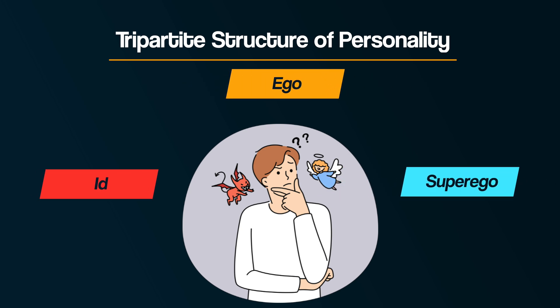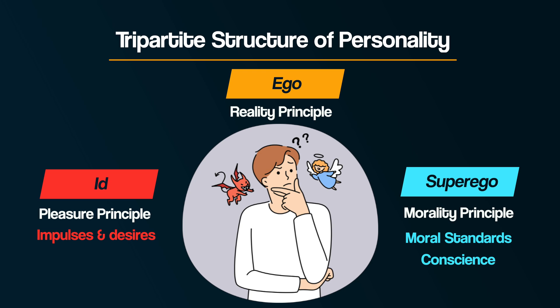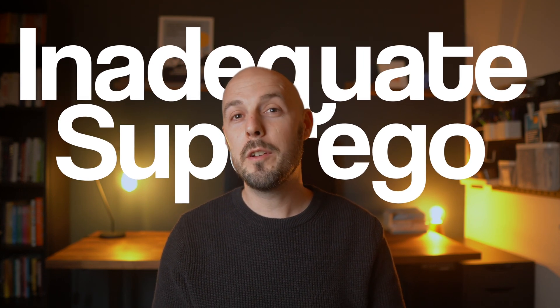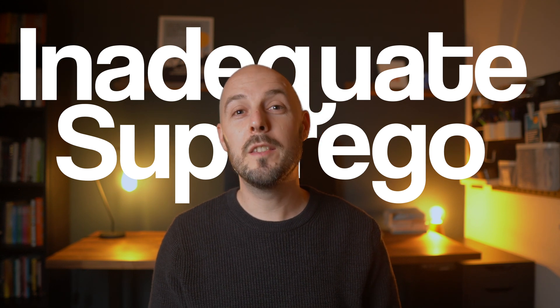According to Freud, the superego, known as the morality principle, is responsible for enforcing moral standards and societal rules. It functions as a kind of internalised conscience that helps regulate impulses from the id, the pleasure principle, and guides the ego, the reality principle, to behave in morally acceptable ways. Blackburn built on this idea to explain how criminal behaviour might result from an inadequately developed superego. If you need a refresher on Freud's ideas and the structure of personality, you can find a video on that in the description below.